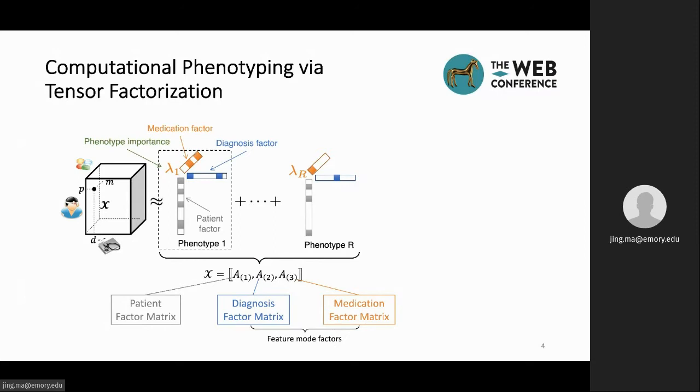Each of these factor matrices contains R columns, and if we take each of the Ith columns from each factor, then these columns, along with the corresponding lambda, will form a rank-1 tensor. The non-zero elements within each rank-1 tensor then constitute a phenotype.